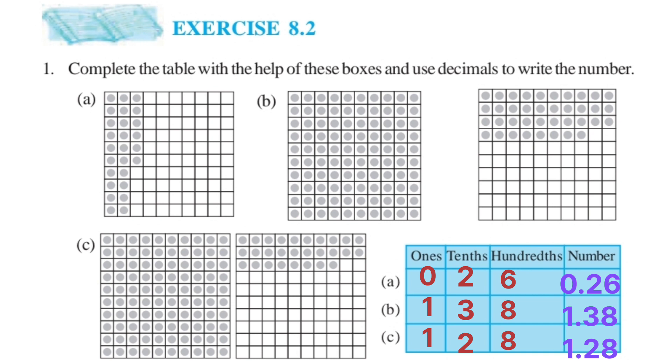So 26 by 100 equals 0.26. Second one: counting 1, 2, 3, 4, 5, 6 - there are 100 parts total and the number is 0.26. Second problem has 1 full box which is 1, then additional parts make it 1.34.